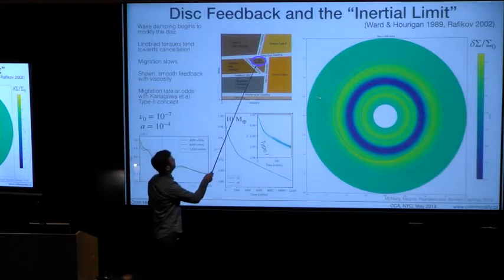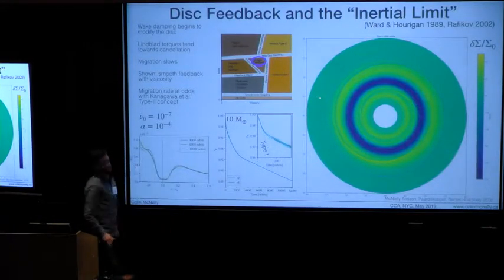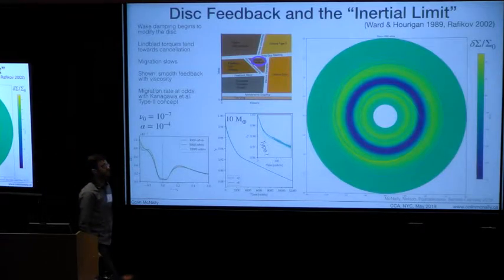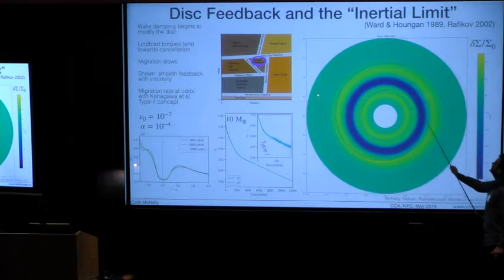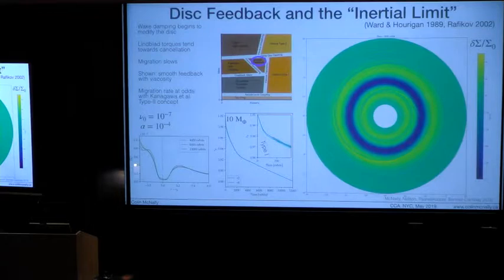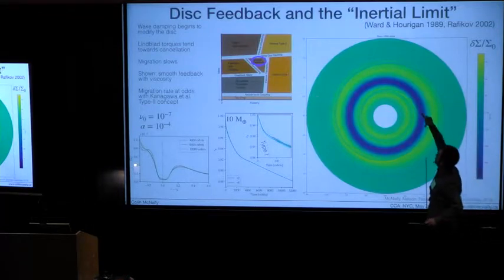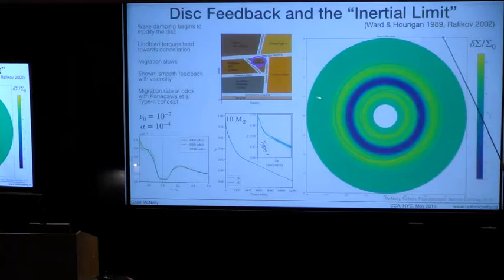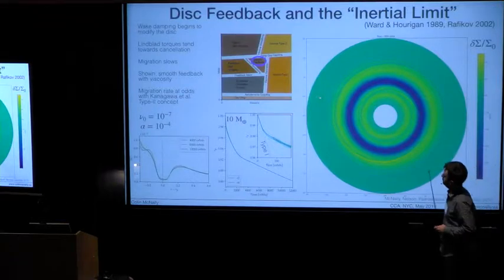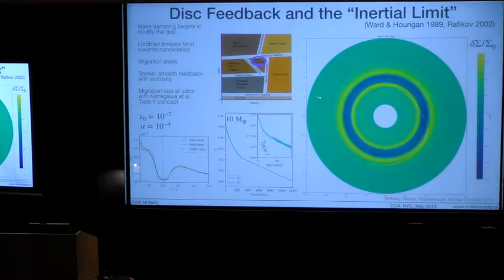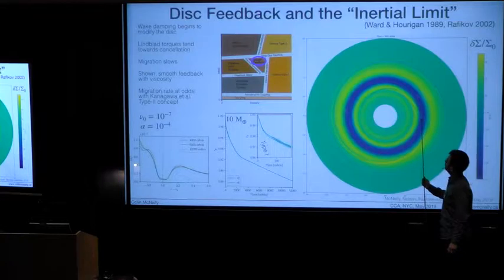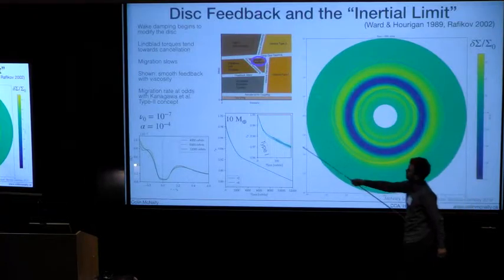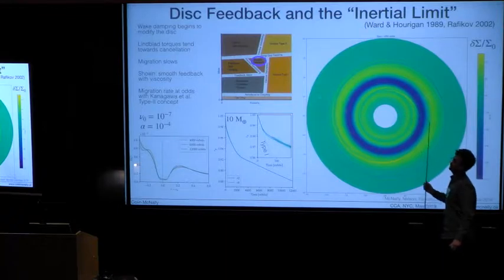Actually we'll start with a little bit of viscosity where we can get a smooth effect. This lets us discuss the feedback slowing of migration with these spiral shocks here changing the vortensity of disk piling up mass and that changes the balance between these two Lindblad torques. This is a pretty old prediction coming up as the inertial limit concept from Ward and then refined by Rafikov 2002. If I run that simulation here, that planet is able to get to a nice kind of steady but much slowed from the type one rate migration due to the near cancellation of those migration torques.